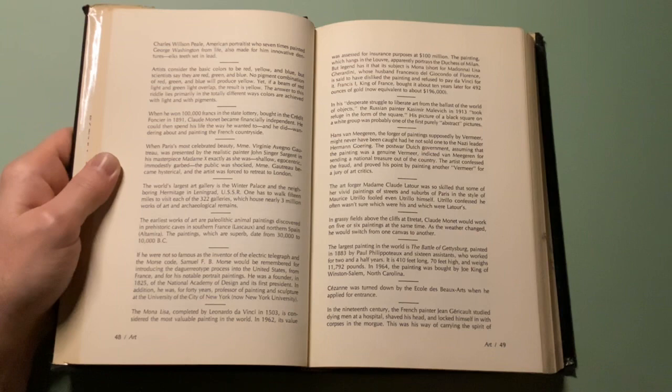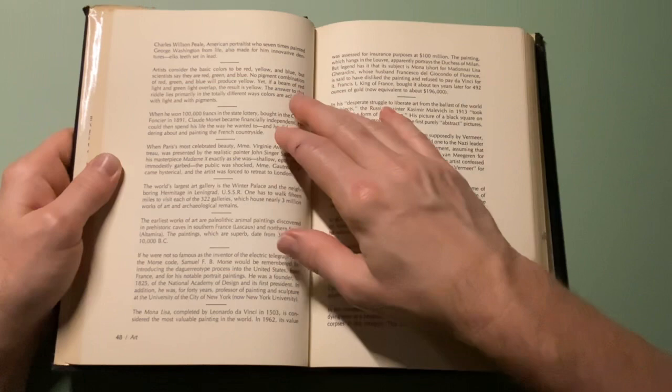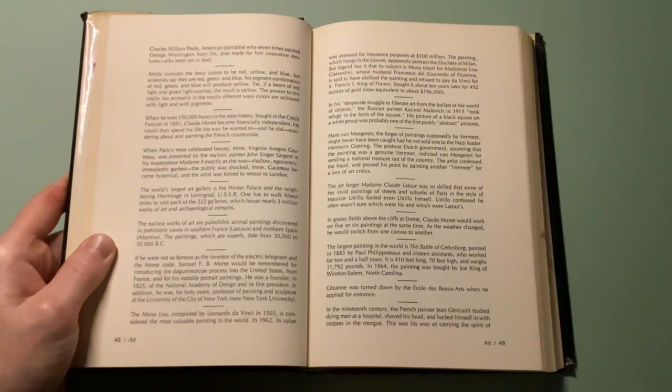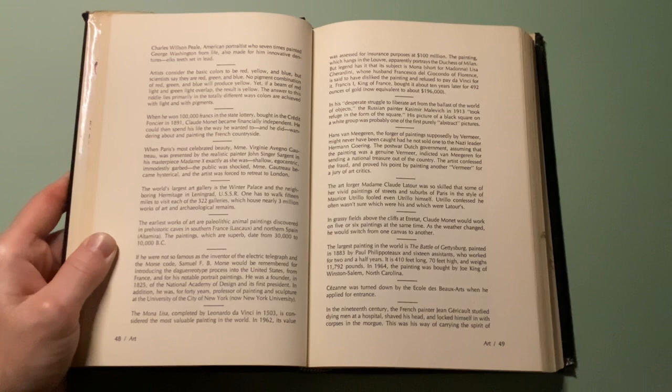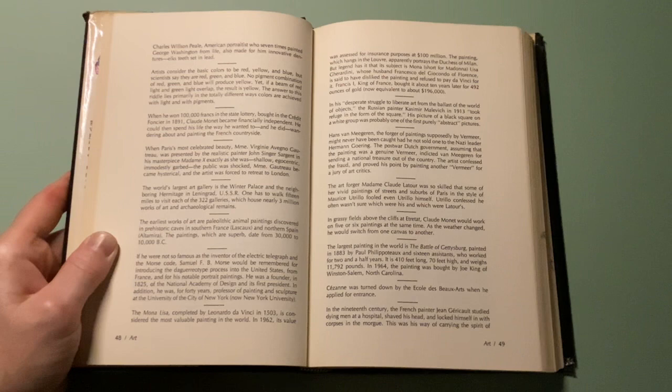If he was not so famous as the inventor of the electric telegraph and Morse code, Samuel F.B. Morse would be remembered for introducing the daguerreotype process to the United States from France and for his notable portrait paintings. He was a founder in 1825 of the National Academy of Design and its first president. In addition, he was for 40 years Professor of Painting and Sculpture at the University of the City of New York, now New York University.